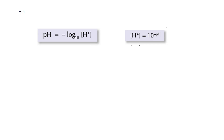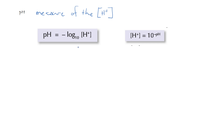Regarding pH and how we undertake pH calculations: pH is simply a measure of the hydrogen ion concentration. Because the hydrogen ion concentration varies greatly, it's helpful to express it in more manageable numbers by measuring the power of the hydrogen ion concentration. Therefore, pH is the negative log base 10 of the hydrogen ion concentration. We can also rearrange this equation so that the hydrogen ion concentration equals 10 to the power of minus pH.